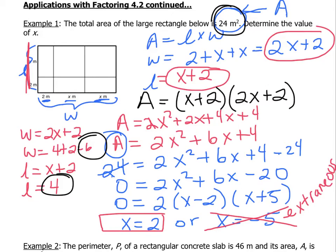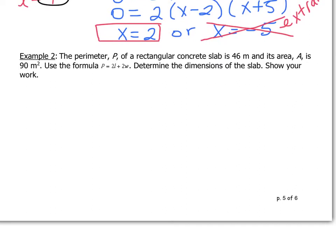Let's go to the next question here. Example 2 says, the perimeter, P, of a rectangular concrete slab is 46 meters and its area, A, is 90 meters squared. Use the formula P equals 2l plus 2w and determine the dimensions of the slab.